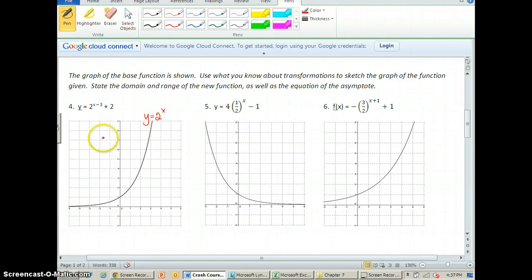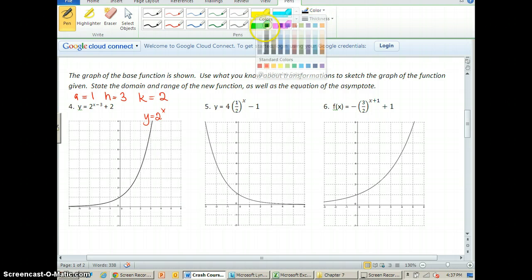So then I need to know what the transformations are. Well, a is equal to 1, so that means that I'm not going to stretch or shrink at all. h, remember you flip the sign, so it's positive 3. And k is positive 2. That means that I have to slide this graph to the right 3 and up 2. Now, something that is going to be important for you to note is do not forget that even though it's not graphed here because it's the x-axis, there is an asymptote in this graph, and that's a part of the graph that you're going to move. So you're going to move that asymptote as well.